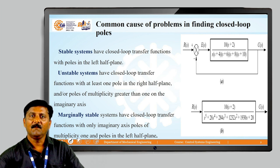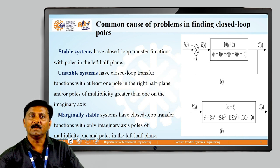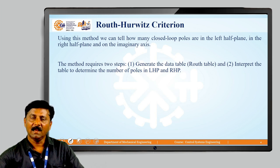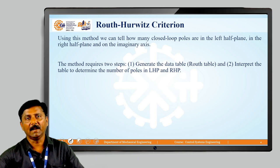The system is unstable when at least one pole lies in the right half of the S plane. The third aspect, marginal stability, occurs when a multiple number of poles or a pair of poles lies on the imaginary axis. So depending on where the poles are located in the S plane, the system can be stable, unstable, or marginally stable. This can be determined using the Routh-Hurwitz criterion.